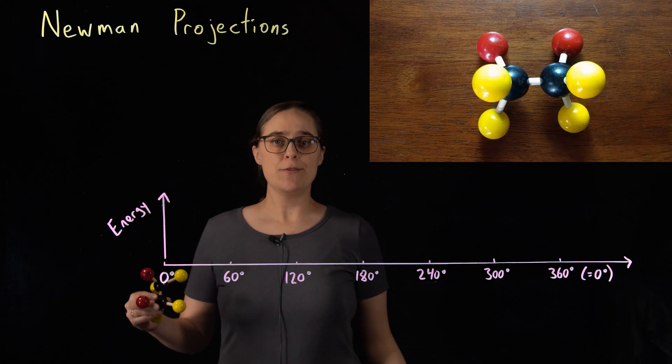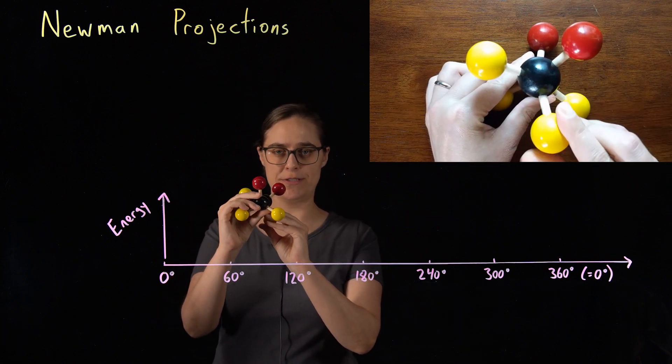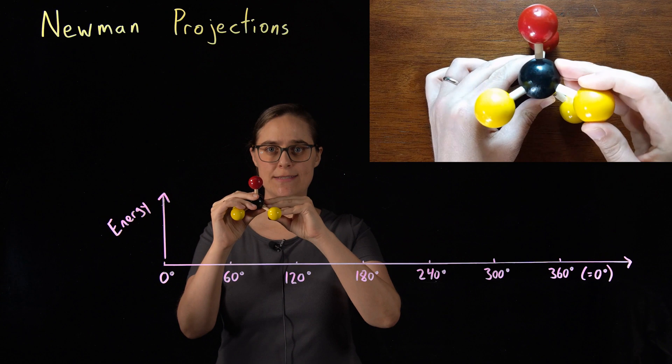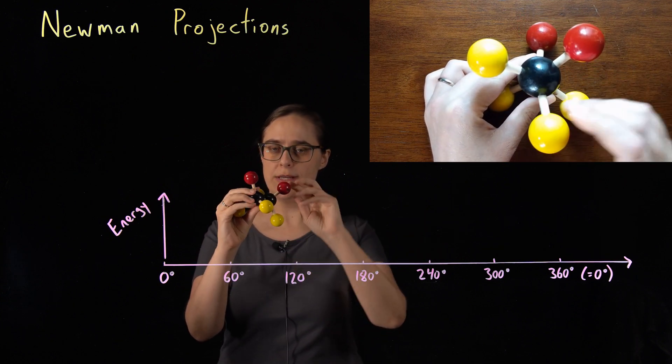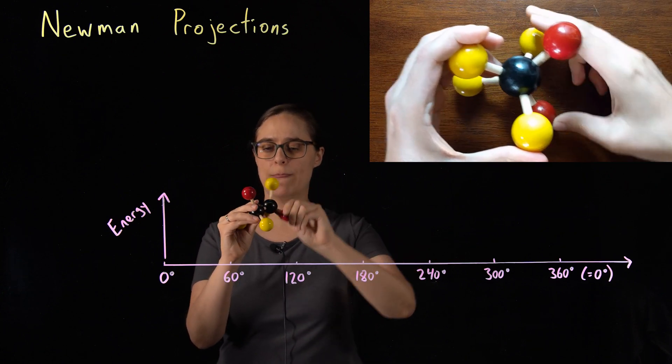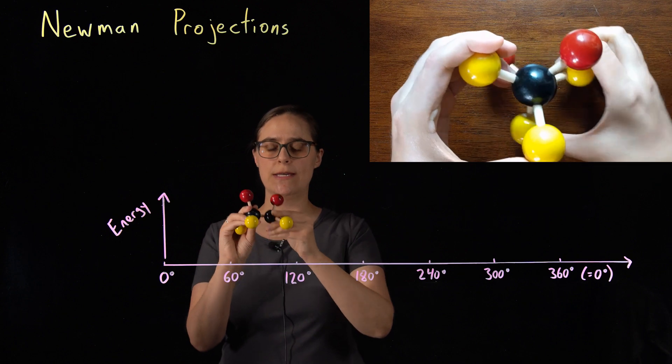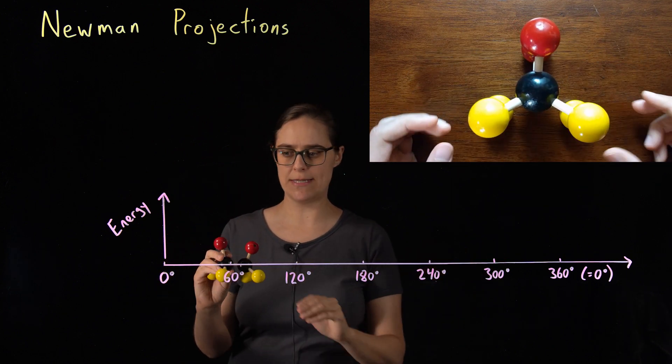So I've given you the two extremes of eclipsed versus staggered conformations. In other words, least stable, highest energy versus most stable, lowest energy. But in reality, this carbon-carbon bond can be at any angle. So what I want to do is plot the potential energy at each and every one of these angles.